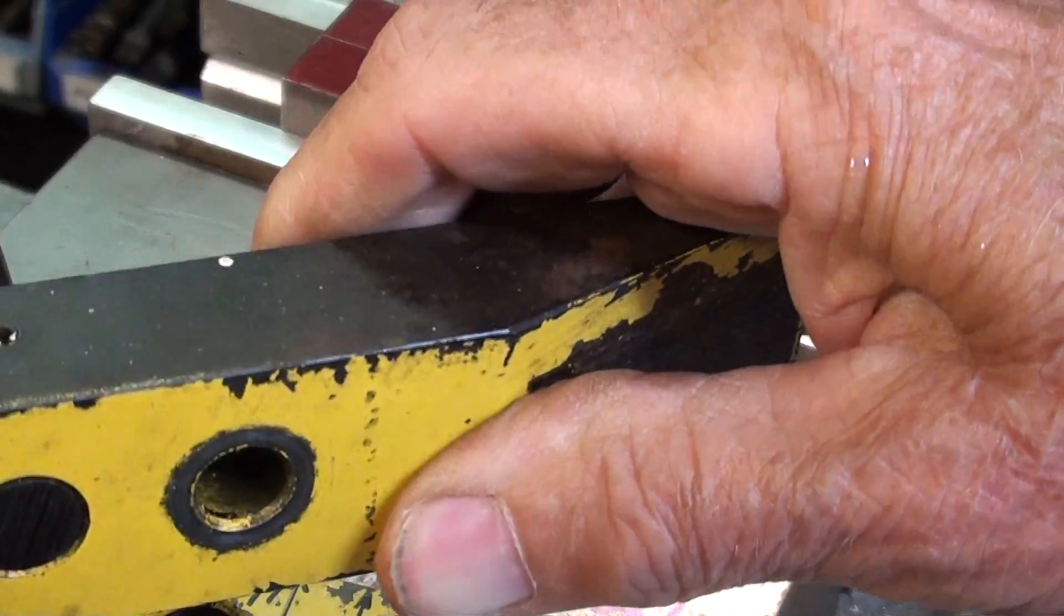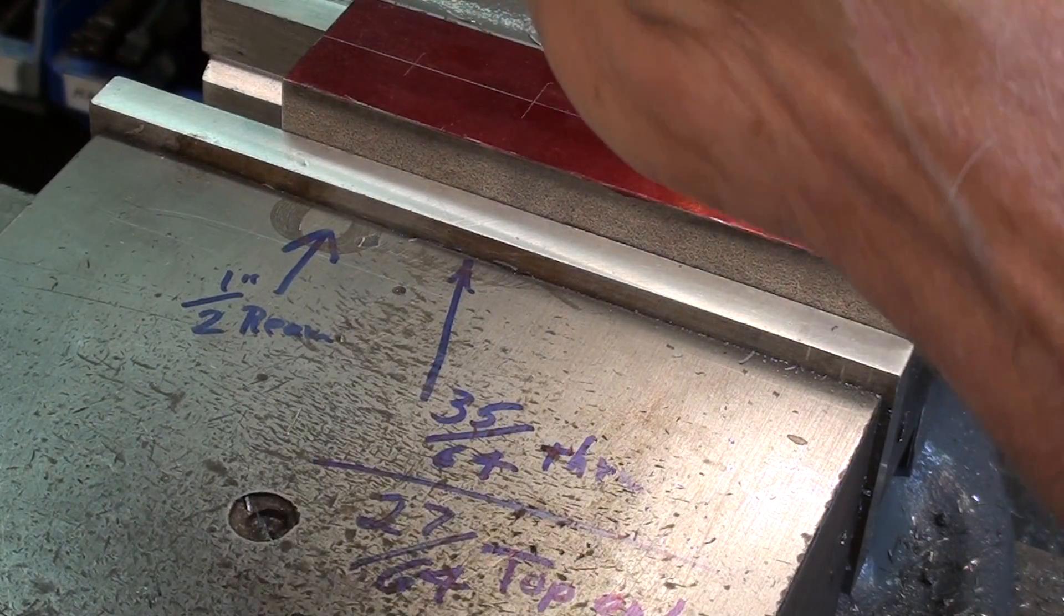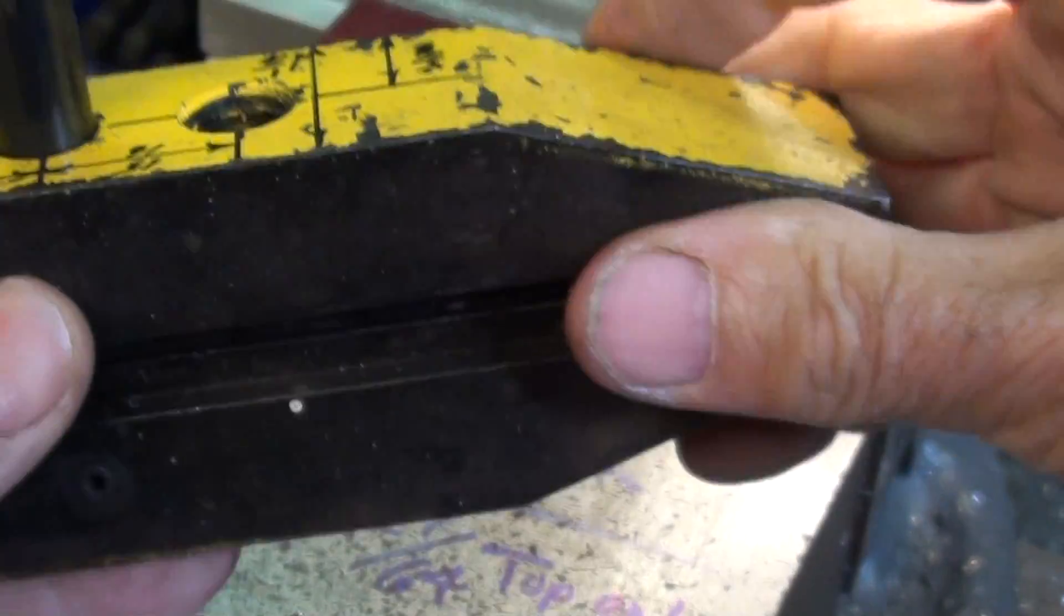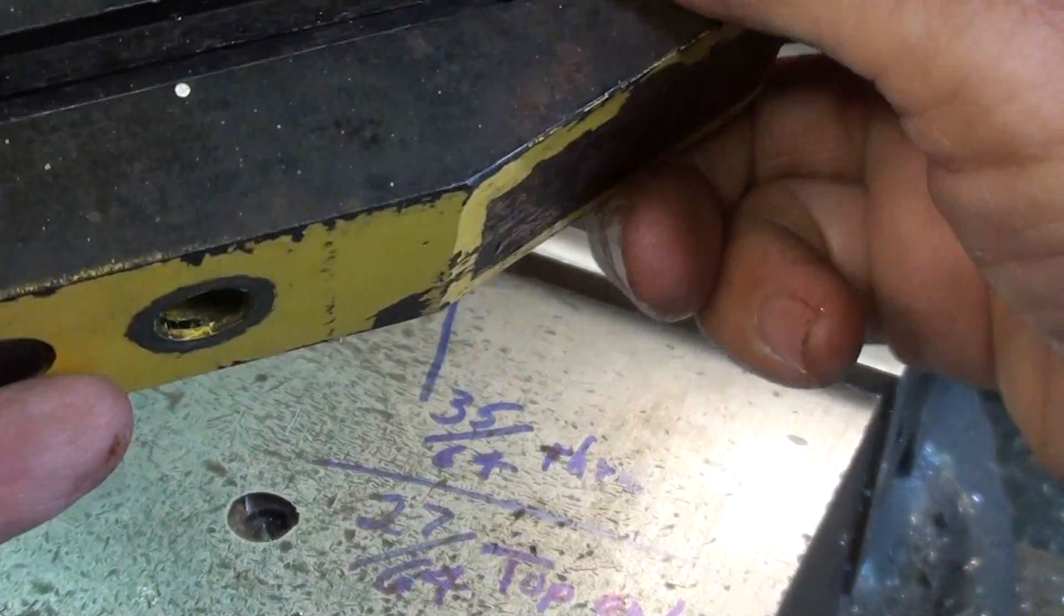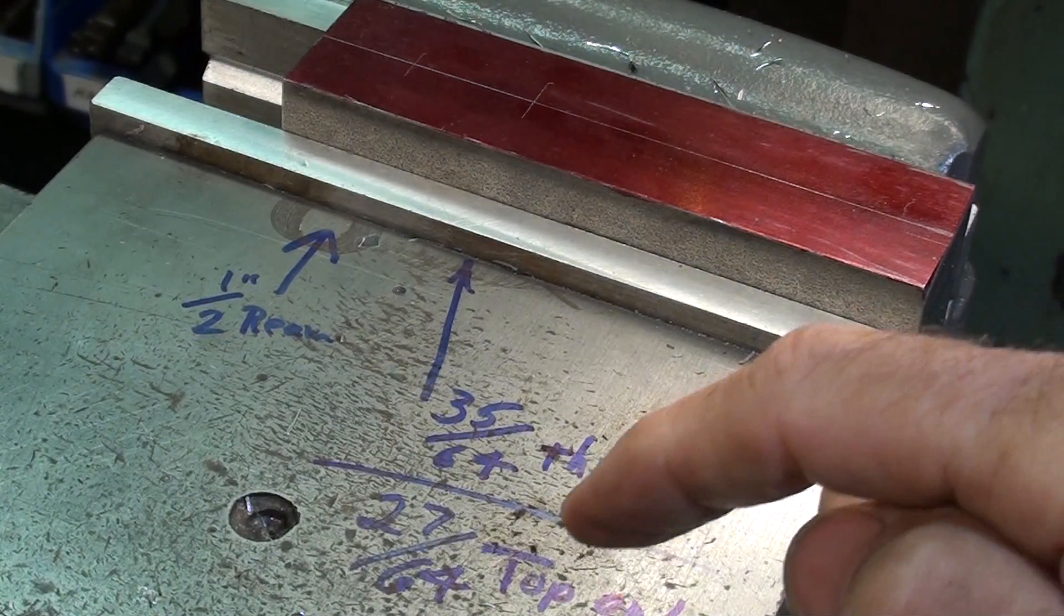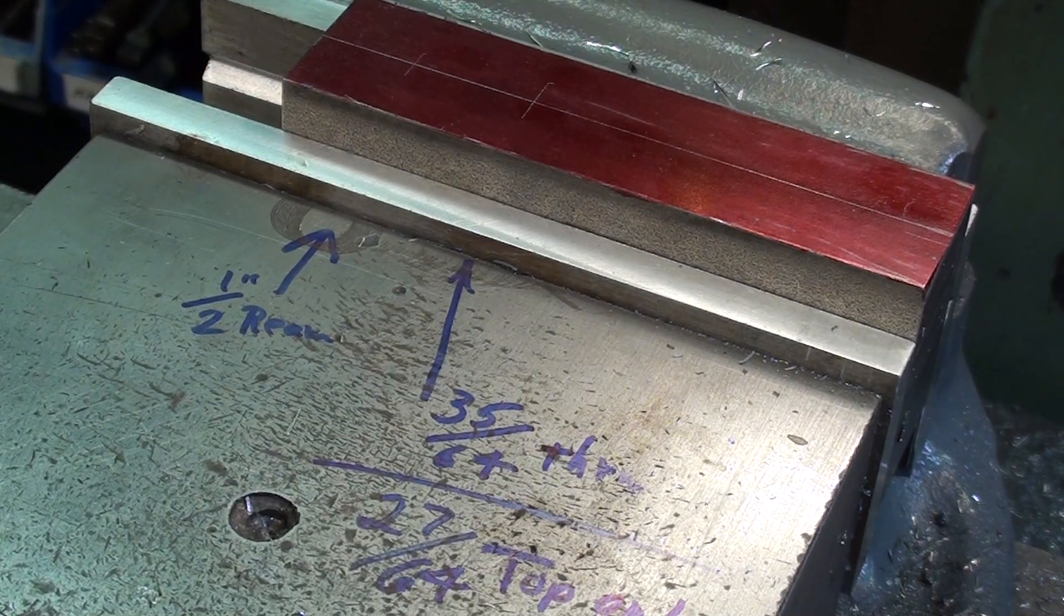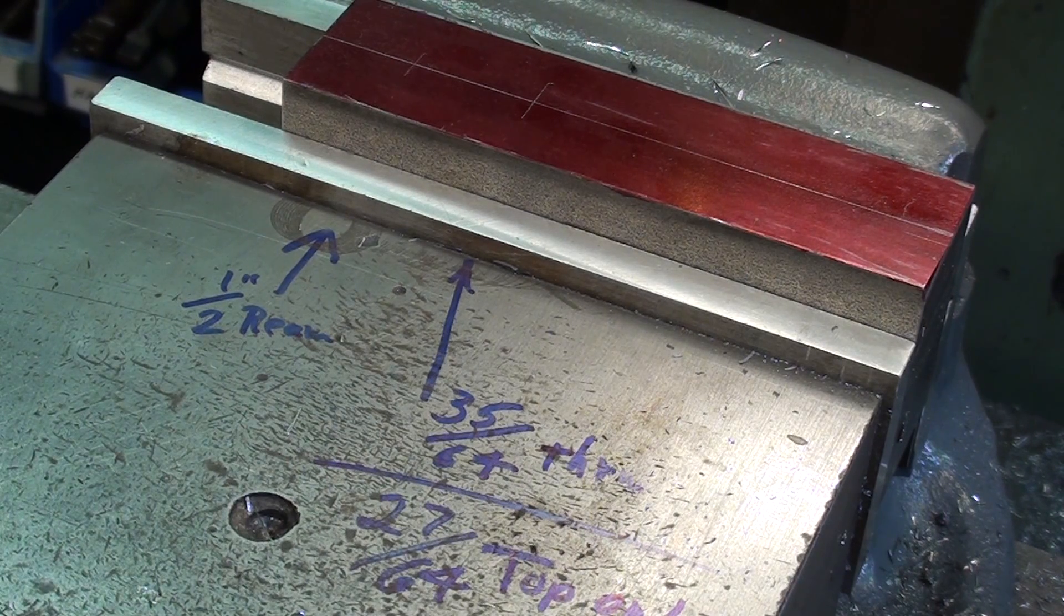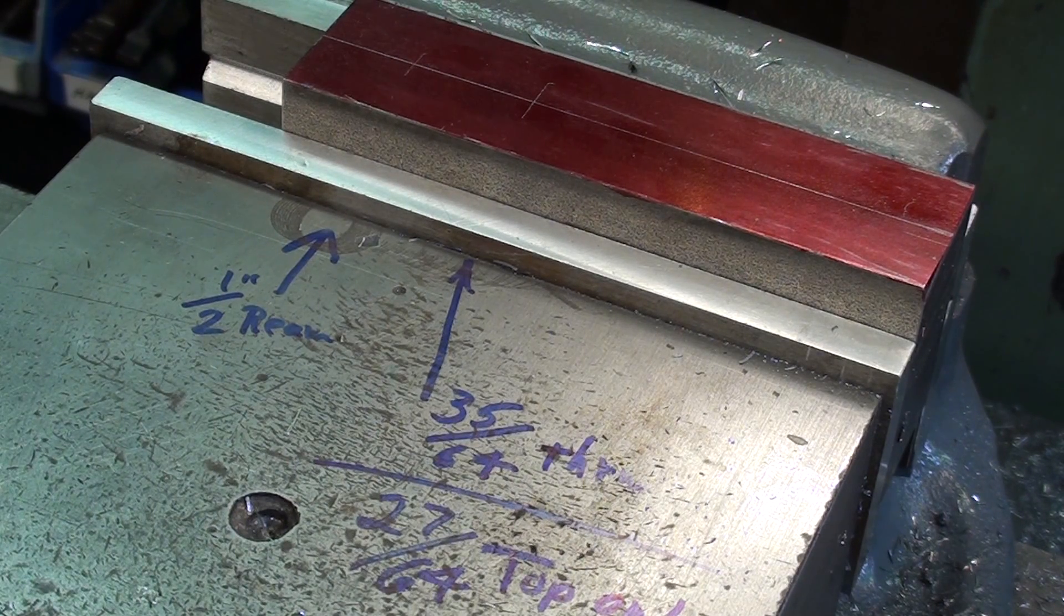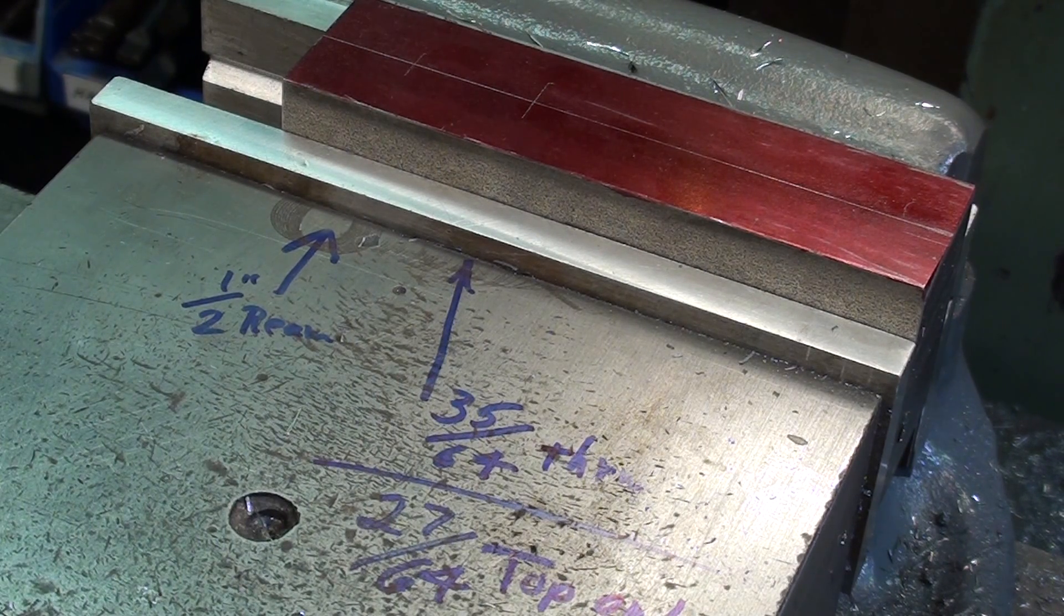3/8 all the way through with both pieces. Both pieces, 3/8 all the way through. Then I'm going to change my drill bit, and I'm going to drill 27/64 through the top piece only. And then tap it 1/2-13 while I still have it in the vise. I hope you can hear me.